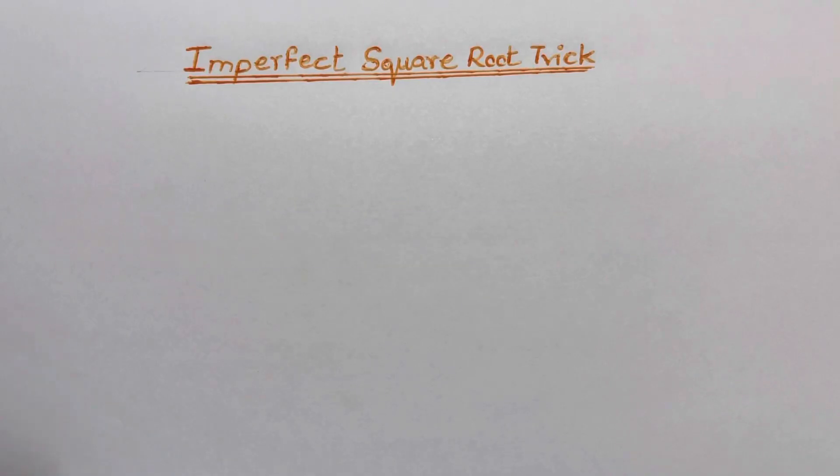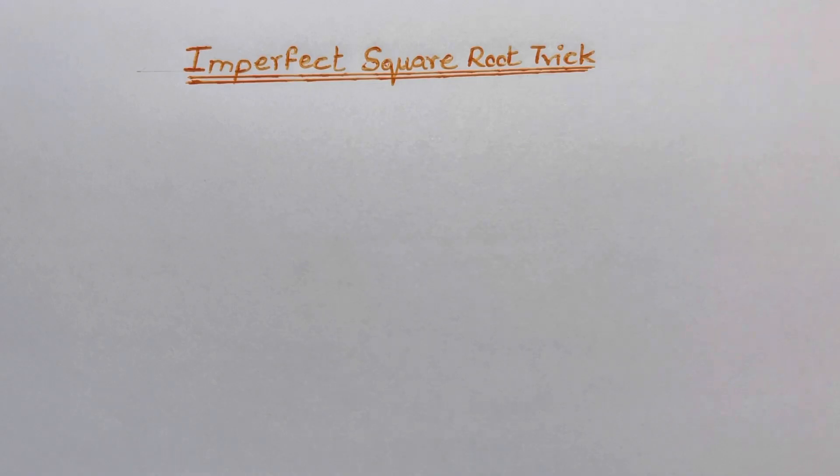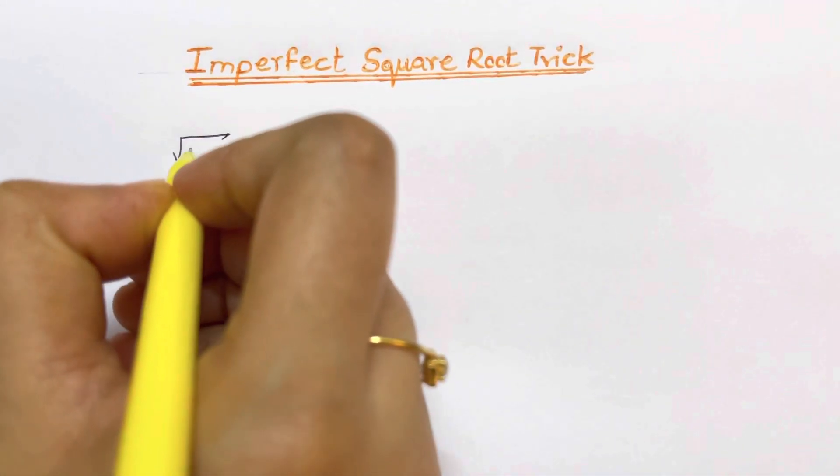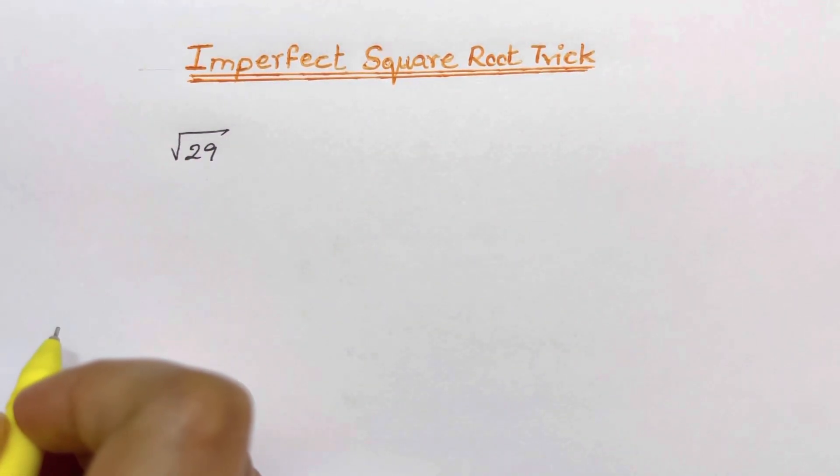Hi everyone, today we are going to learn how to find imperfect square roots. So suppose for example we have the square root of 29. How do you find the square root of an imperfect number? Perfect numbers are really simple.